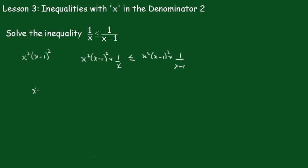So we'll have x outside of x minus 1 all squared is less than or equal to... Now this x minus 1 will cancel with this one, so we'll have x squared outside of x minus 1.